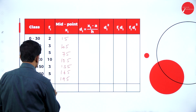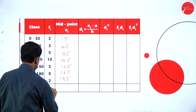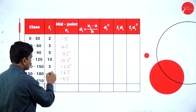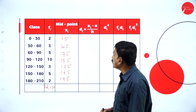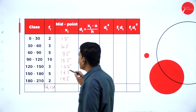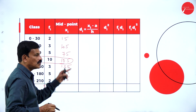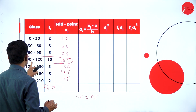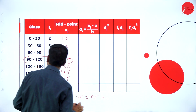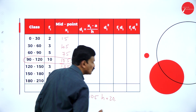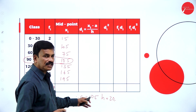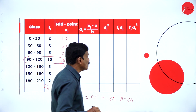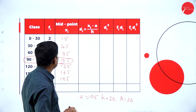Now let us find out the assumed mean. Here the assumed mean A is equal to 105. Therefore A is equal to 105. The interval difference h is equal to 30, the class width. So assumed mean A equals 105, h equals 30, and n equals sigma fi equals 30. Now find out the deviation yi, that is di, which is xi minus A divided by h.